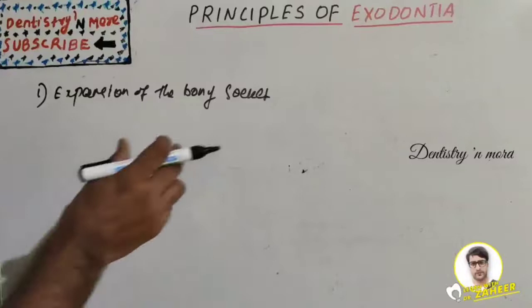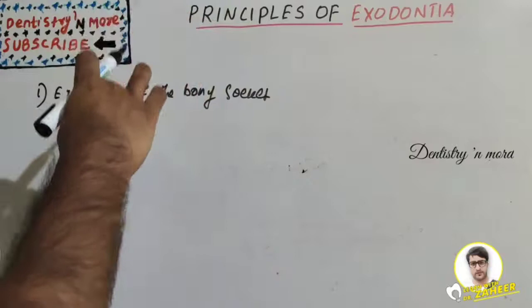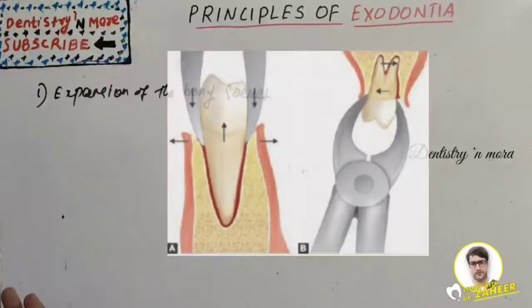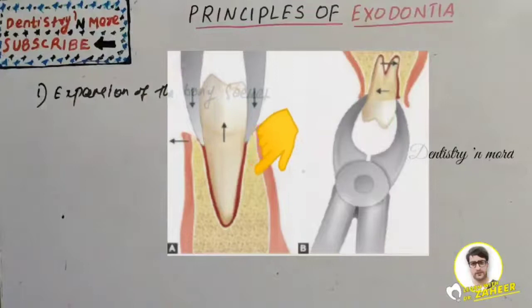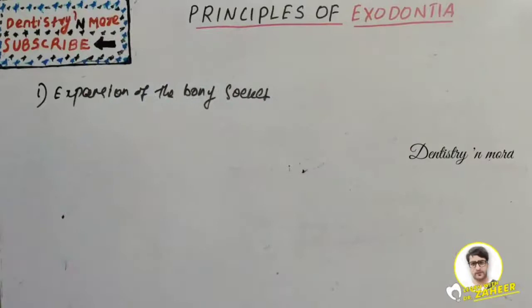The center of rotation should be displaced as apically as possible. If the center of rotation is more apical, the force needed is less and we can easily remove the tooth. If it is more coronal, there are high chances of tooth breakage. The basic movements should be towards buccal and palatal.